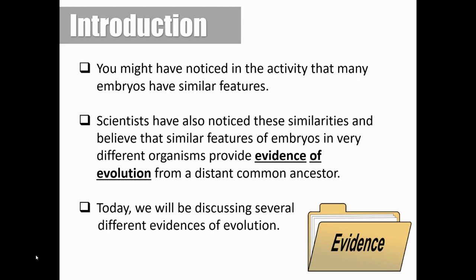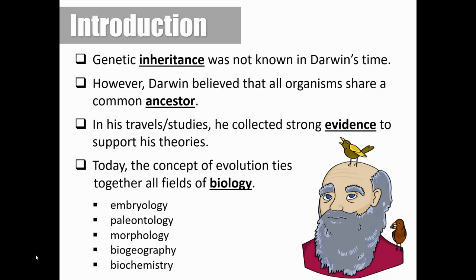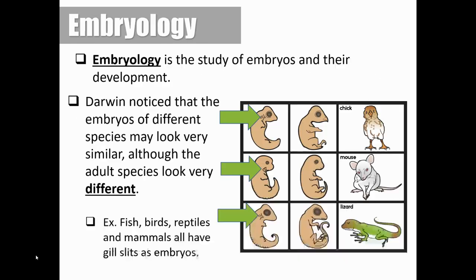This is exactly what scientists say provides evidence that these organisms share a distant common ancestor. In this lesson, we're beginning to bridge genetics with evolution, and we're going to be pulling from some of our previous knowledge of genes throughout the remainder of this unit. Genetic inheritance was not known during Darwin's time. However, Darwin believed that all organisms shared a common ancestor, and in his travels and studies he collected really strong evidence to support his theories. Some of this evidence we still use today, like fossil evidence. Today we're going to move through some different fields of biology which provide strong evidence for the theories of evolution we've been talking about throughout this unit.